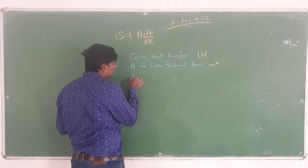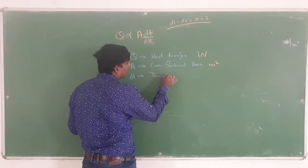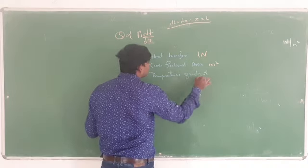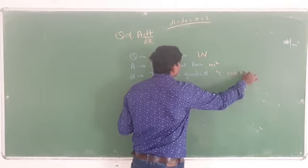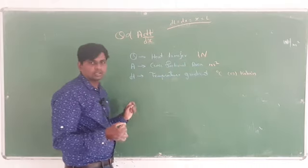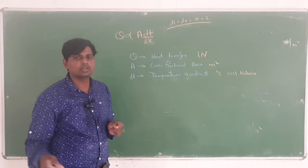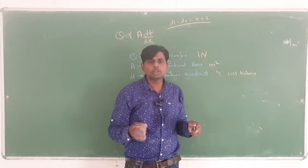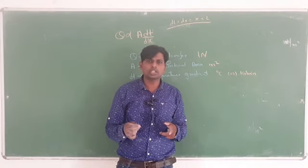dT stands for temperature gradient — that is, the difference in temperature. The unit can be degree centigrade or Kelvin. If you add 273 to degree Celsius it becomes Kelvin. You can keep it in either unit while solving problems; I will explain which to use.